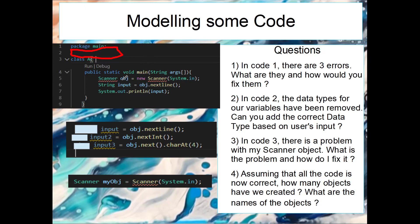Second, we've created the object and the method is used here, however the method is not nextLine with a lowercase 'l' — it's nextLine with an uppercase 'L', so that lowercase 'l' should be changed to an uppercase one. Lastly there will be an error because we have to close the scanner, so we need to say object.close() — that will close the object and stop all the errors.